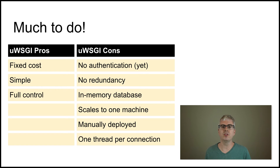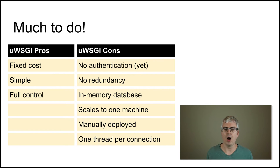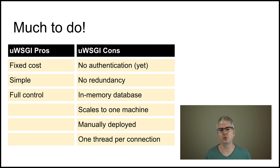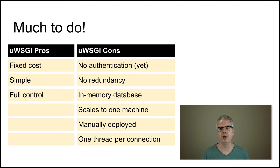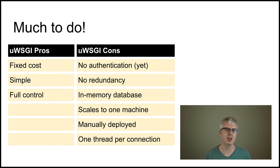Let's talk about the advantages of the uWSGI version over App Engine. First, it's a fixed cost — if we have a machine, our application runs on that machine and however much we pay for that machine is a fixed cost. Second, we've built a very simple system, so it's easier to understand what's going on, easier to debug, easier to figure out. Third, we have full control over the entire system, which is both a plus and a minus: it's a plus that we get to control it, but it's a minus because if anything goes wrong, we've got to fix it ourselves.